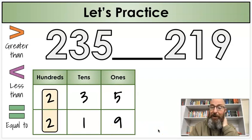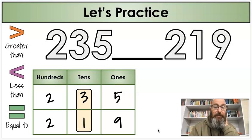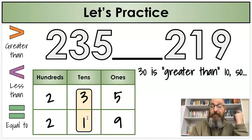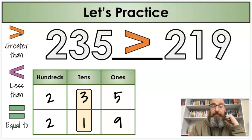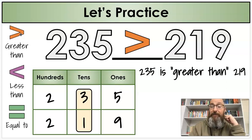Compare my hundreds first because I always start with the biggest one. And the two hundreds were the same. So I'm going to compare my tens next. 30 is bigger than 10. These are not the same. If 30 is greater than 10, I'm going to use the greater than symbol right up there, which means 235 is greater than 219.